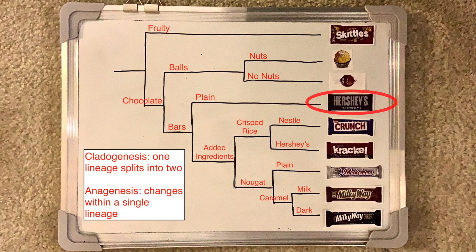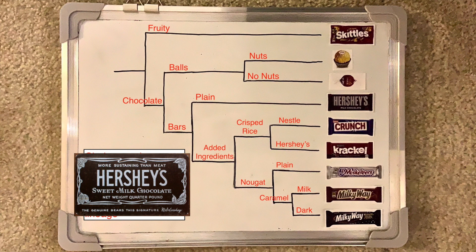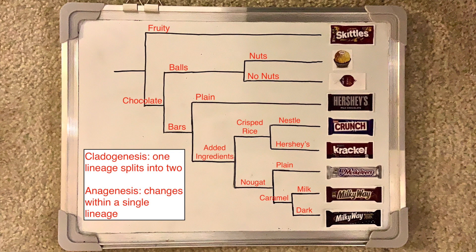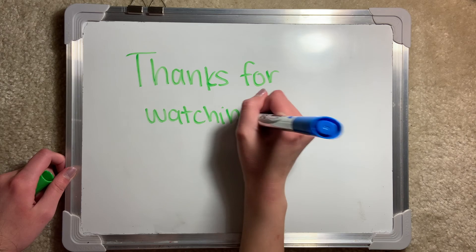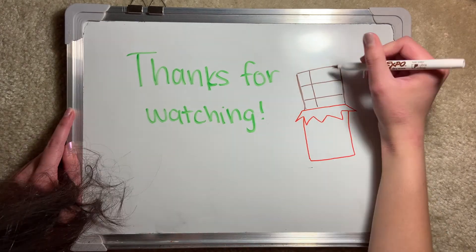For example, the classic Hershey's bar has changed over the years since they were first sold in 1900. From the packaging to the shape and formula, the Hershey's bar has experienced changes within its own lineage. Anagenesis occurs in all species and allows for gradual evolution without speciation. Because of both anagenesis and cladogenesis, we now have all the great candies we know and love today. That concludes this video on phylogenetic trees. Thanks for watching.